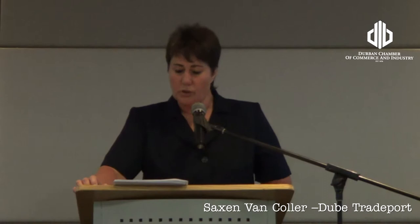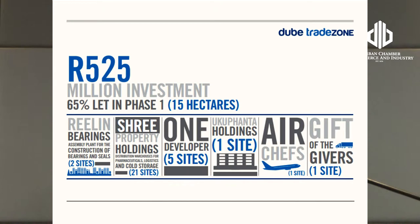The Trade Zone, as an industrial development zone, currently has more than 525 million rand already invested in Phase 1, equating to about 65% of available land leased out. As an example of private investment, we have Steet Property Group developing a distribution centre for pharmaceuticals, logistics and coal storage, covering 21 sites. Brinco Rilan, in a joint venture, is developing an assembly plant for construction bearings and seals, taking two of our industrial sites.